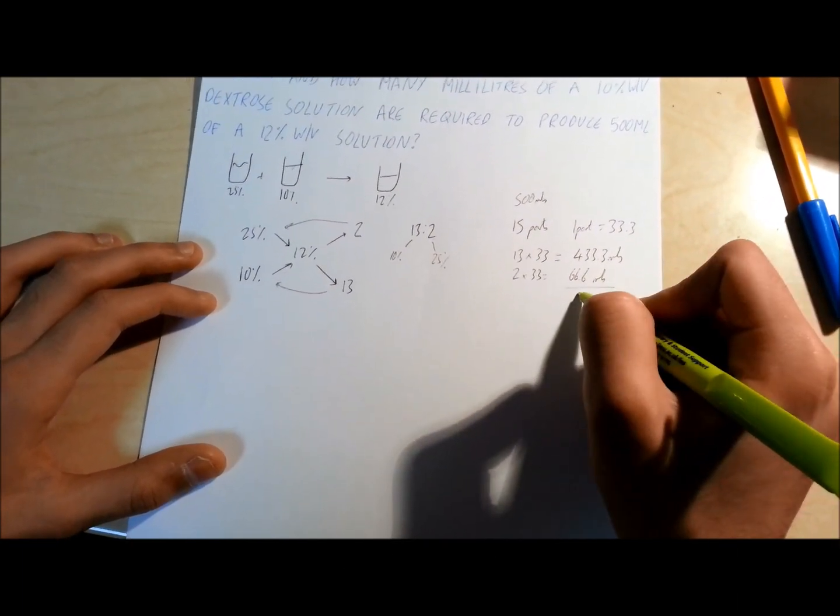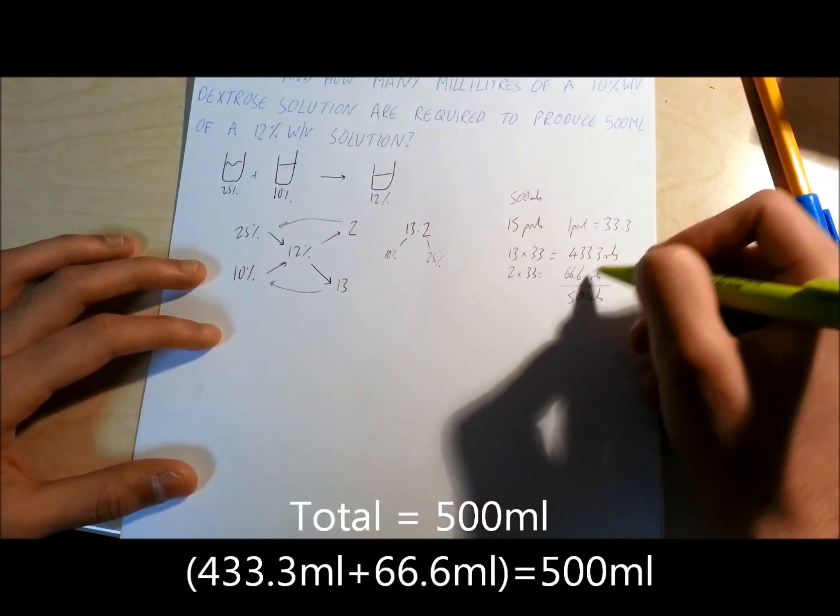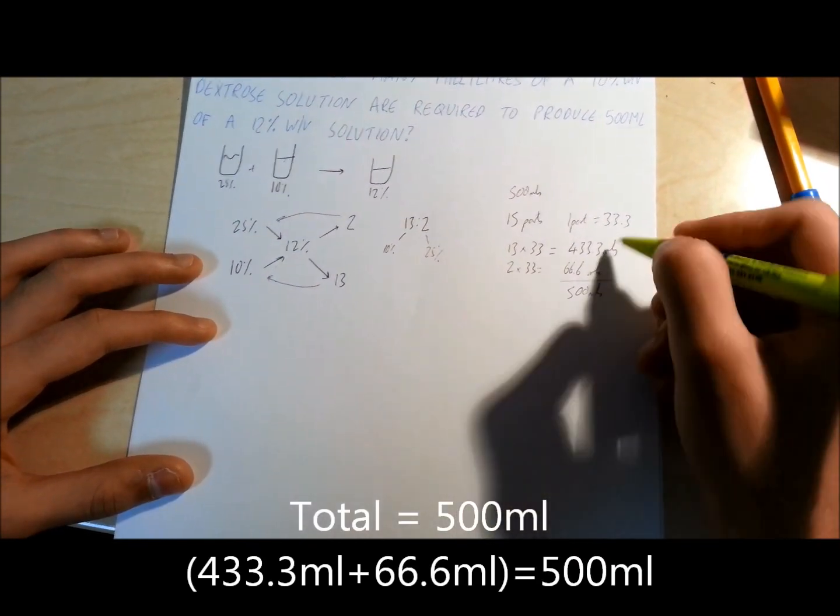Now, you can see that actually adds up to 500 mils. Near enough, with 0.9 rounding. So that's how much we actually need.